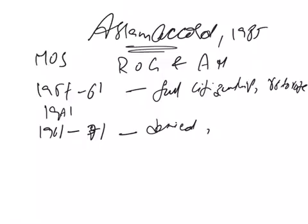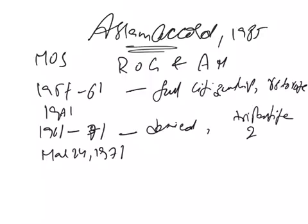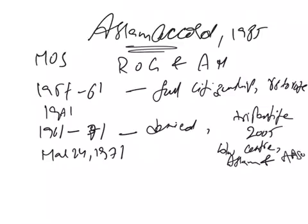Anyone who entered the state without documents after March 24, 1971 will be declared a foreigner and deported. However, the provisions of the Assam Accord were not implemented for a long time. Following this, another agreement called the Tripartite Agreement was signed in 2005 between the Centre, the Assam government, and the All India Students Union, where the decision to update the NRC on the basis of NRC 1951 and electoral rolls up to 1971 was taken. A two-year deadline was fixed, and a pilot project was launched in some districts, but it was disrupted due to violent agitations by groups opposing the NRC.